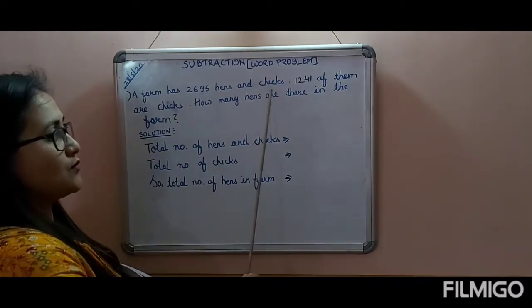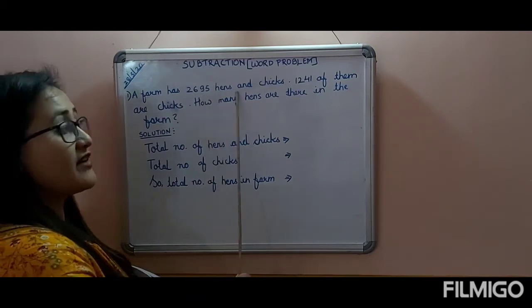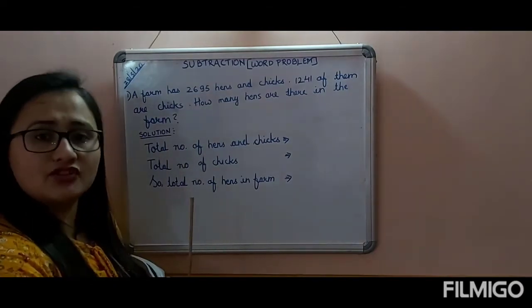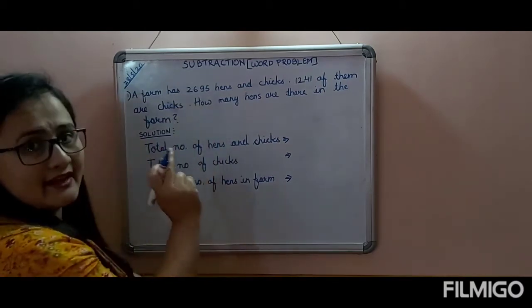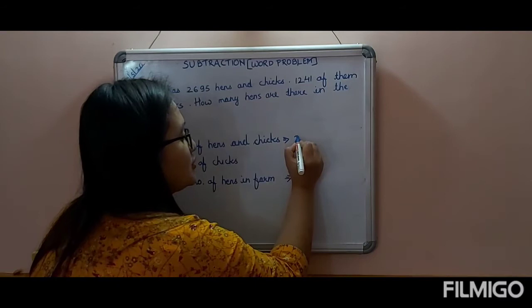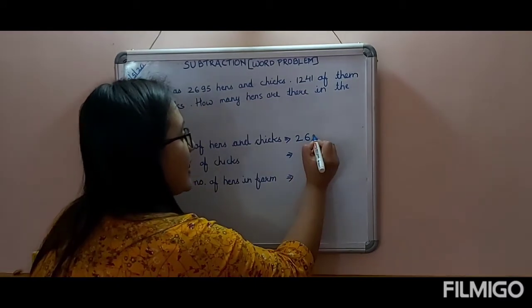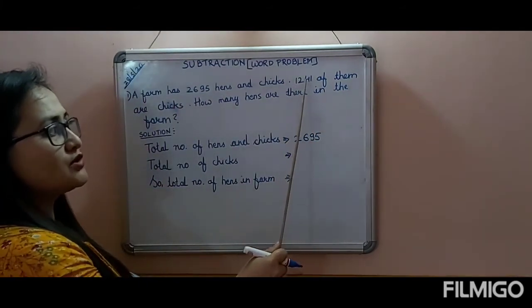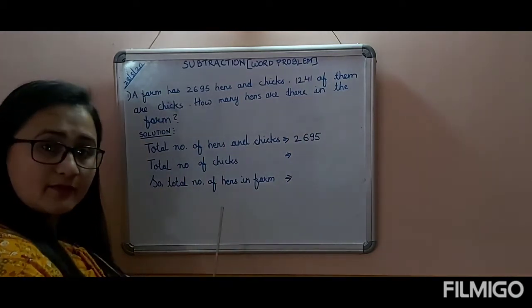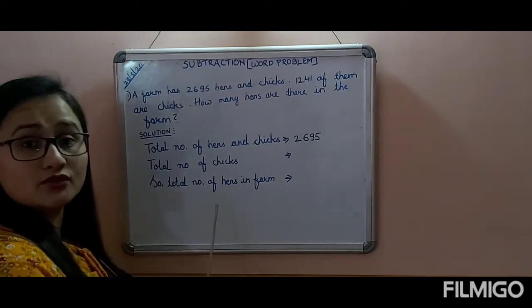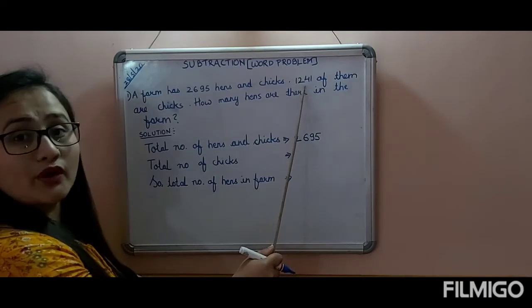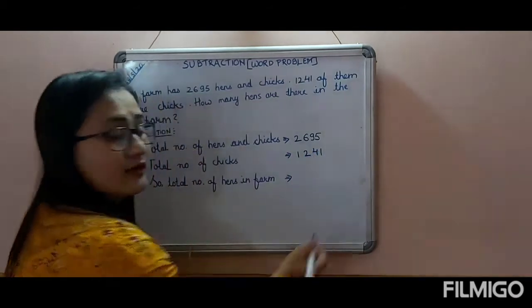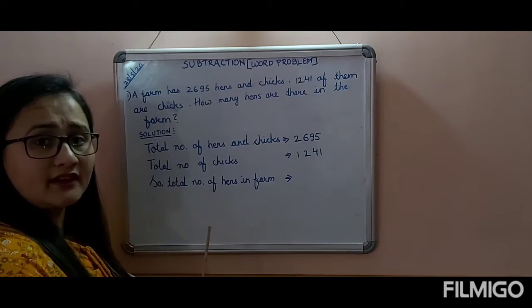Now, how to write the statement. Read the first line: a farm has 2695 hens and chicks. After writing 'Solution,' you have to write: total number of hens and chicks = 2695. Then move on to the next: 1241 of them are chicks, so the second statement will be: total number of chicks = 1241.